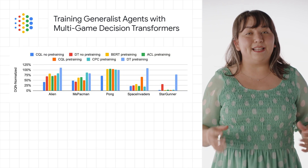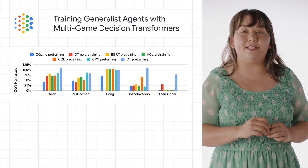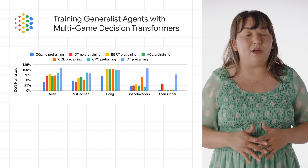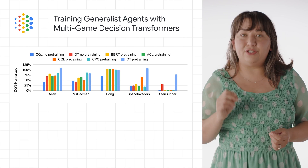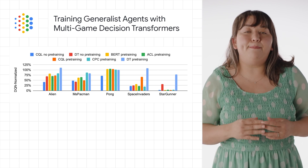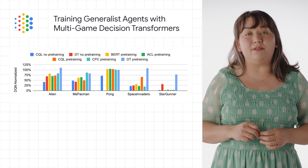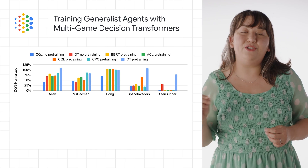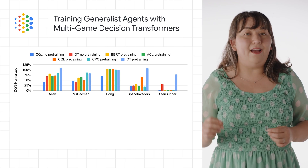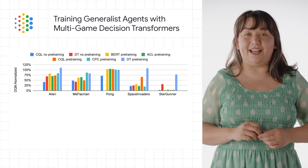Last, pre-trained multi-game decision transformers are fast learners. Multi-game decision transformers can be considered pre-trained models capable of being fine-tuned rapidly on small amounts of new gameplay data.